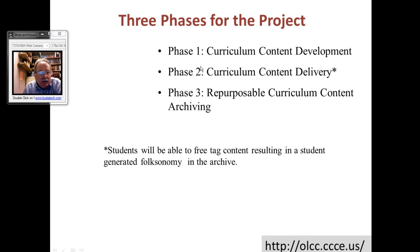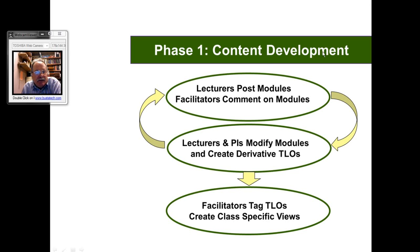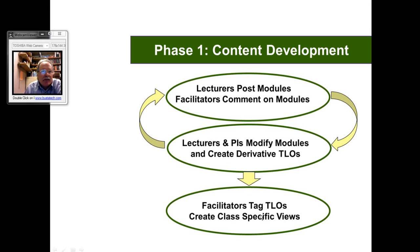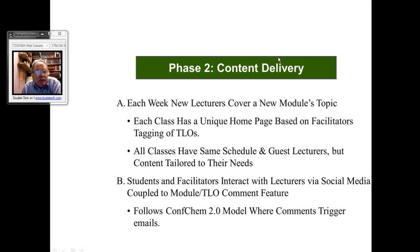Both the first two phases require Web 2.0 participatory web tools. In the curriculum content development phase, lecturers post material online and facilitators comment on the modules. Then, with the PIs interacting with facilitators and lecturers, we derive derivative teaching and learning objects based on the facilitators' comments on the lecturers' original modules. The facilitators can then tag these TLO modules appropriate to what they feel are the needs for their specific set of students. In the content delivery phase, each week a new lecture covers a new topic, and each class has its unique homepage based on its facilitators' tagging of the TLOs.